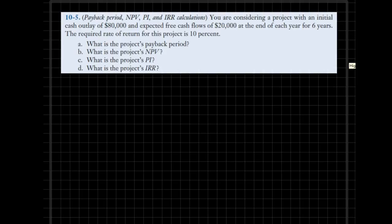So an initial cash outlay of $80,000 will generate free cash flows of $20,000 for the next six years. These are the key features of a project that our firm is considering.